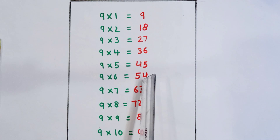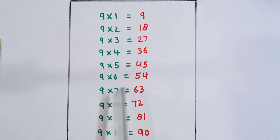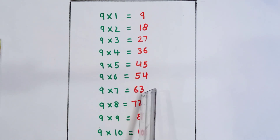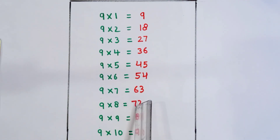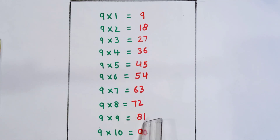9 6 is 54. 9 7 is 63. 9 8 is 72. 9 9 is 81. 9 10 is 90.